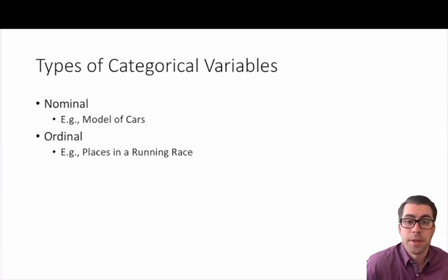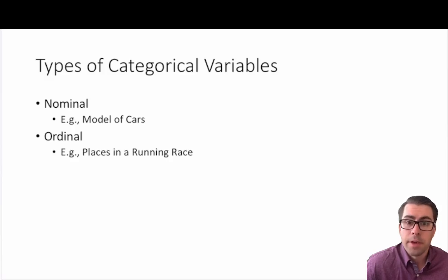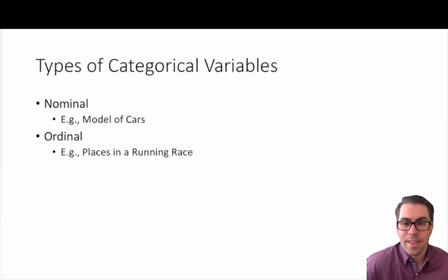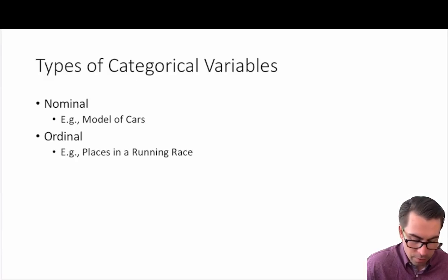Then we have ordinal categorical variables. A good example is places in a running race. If I were in a two-person race against Usain Bolt in the 100-meter dash, Usain Bolt would decisively win and come in first. Since it's only a two-person race, I would come in second by default. What that wouldn't tell you is the distance or time between us crossing the line — which would certainly be considerable — but I would come away in second place. That tells us about the order of completion of the race, so we'd label it an ordinal variable.